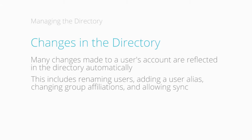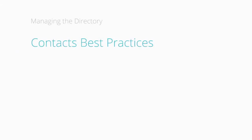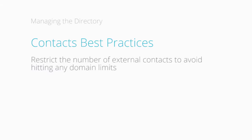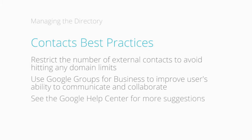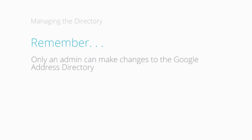This includes actions like renaming users, adding an alias, changing users' group membership, or allowing users to sync contacts with their phone. Only an admin can make changes using the admin console or developer's API. Some best practices for admins to ensure the best performance of contacts and the Google Apps directory are restricting the number of external contacts to avoid reaching any domain limits, and using Google Groups or Google Groups for Business in conjunction with contacts, which allows for greater flexibility in how users can communicate and collaborate with each other and with people outside your domain.